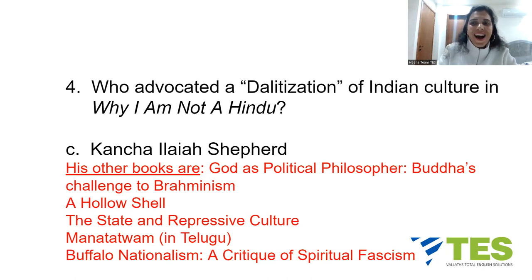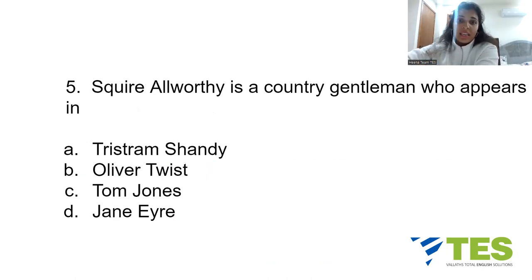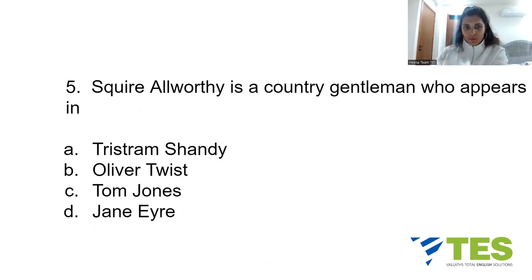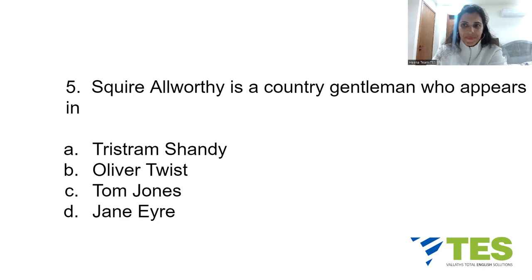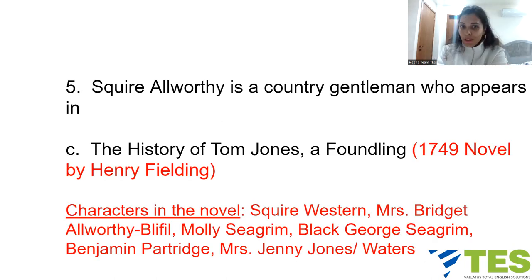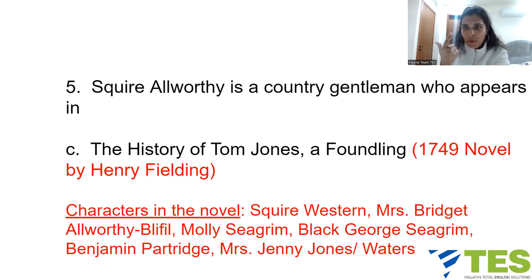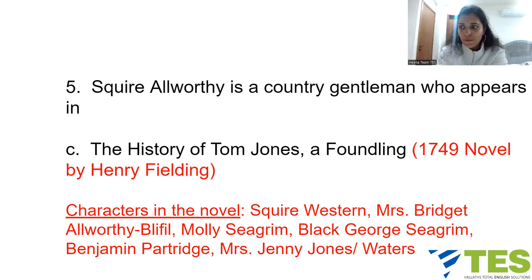The last question of the day: Squire Allworthy is a country gentleman who appears in — A. Tristram Shandy, B. Oliver Twist, C. Tom Jones, or D. Jane Eyre. The answer is C. The full title is 'The History of Tom Jones, A Foundling,' a 1749 novel by Henry Fielding. It is a comic, Bildungsroman, and picaresque novel: a Bildungsroman because it focuses on the psychological and moral growth of the protagonist Tom, and picaresque because Tom is a roguish character.